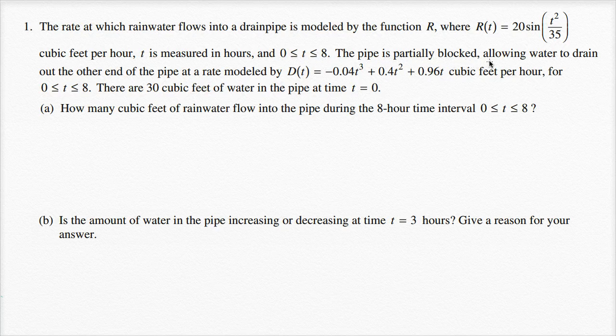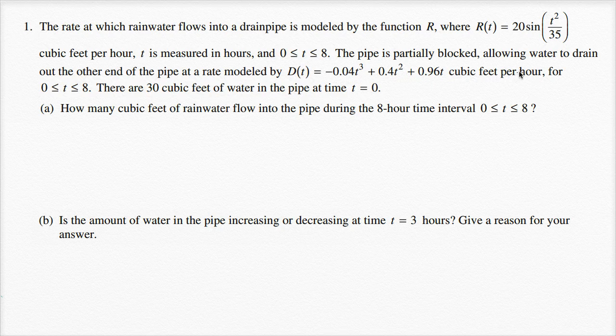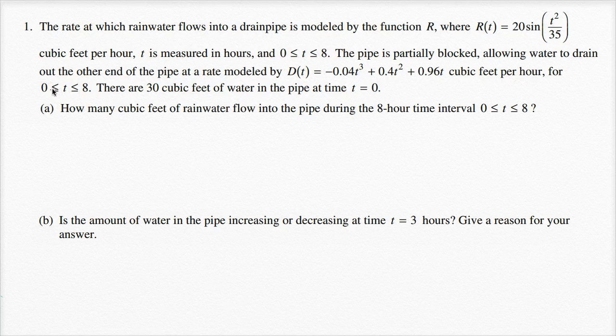The pipe is partially blocked, allowing water to drain out the other end of the pipe at a rate modeled by D(t), equal to negative 0.04t to the third power plus 0.4t squared plus 0.96t cubic feet per hour. For the same interval, there are 30 cubic feet of water in the pipe at time t equals zero.